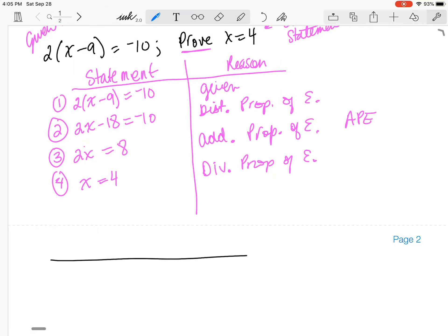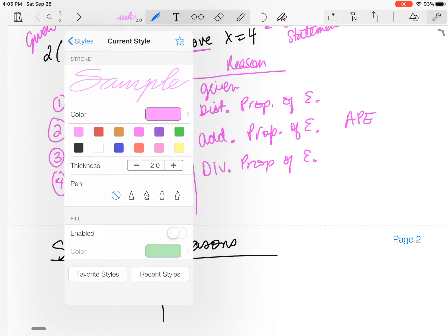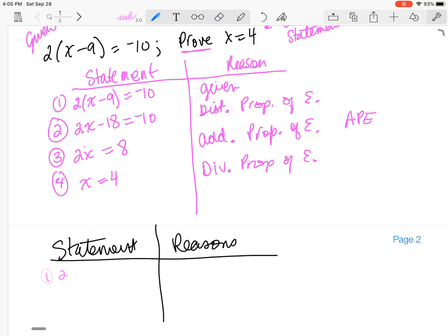So if I had my statements and this is my reasons. All right. And let's say I'm going to write my given. So my given is 2 times x minus 9 is equal to negative 10. That's given.